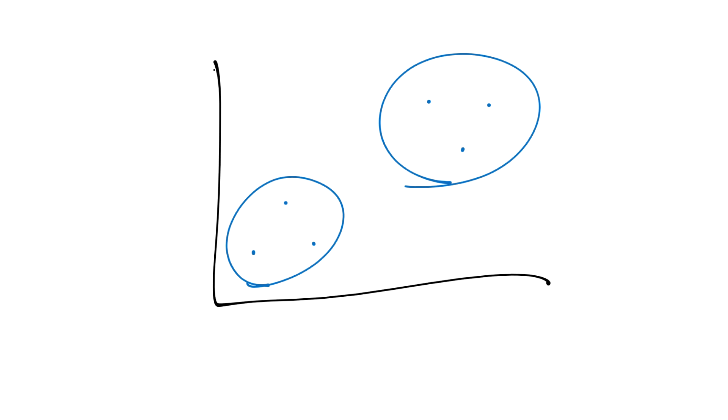What we just did just now is actually clustering. When we were just looking at this and we decided that these were two groups, we actually did clustering. Classification is actually even more simple than what we just did here. What classification is going to do is the following.